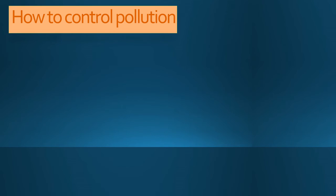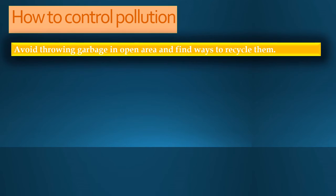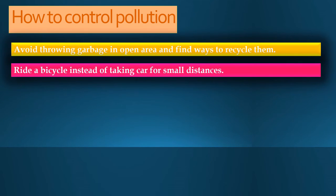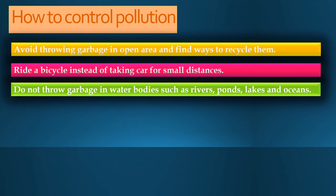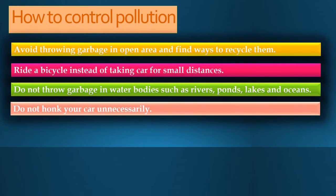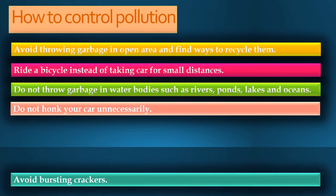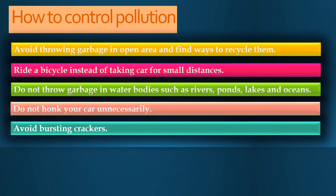How to control pollution? We should avoid throwing garbage in open areas and find ways to recycle them. Ride a bicycle instead of taking a car for small distances. Do not throw garbage in water bodies such as rivers, ponds, lakes and ocean. Do not honk your car unnecessarily. Avoid bursting crackers.